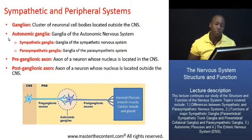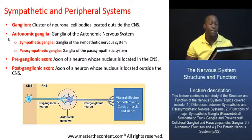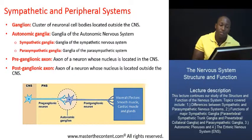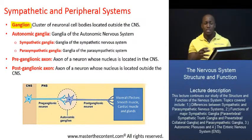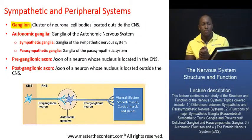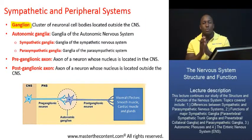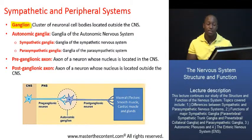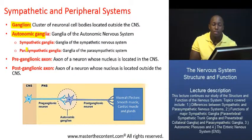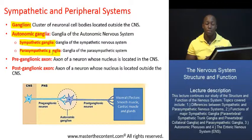Next, we are going to define a few important terms. A ganglion is basically a cluster or aggregation of neuronal cell bodies located outside the central nervous system — just a grouping of neuron cell bodies outside the CNS. Autonomic ganglia are basically ganglia of the autonomic system. Sympathetic ganglia are ganglia of the sympathetic nervous system. And similarly, parasympathetic ganglia are ganglia of the parasympathetic system.